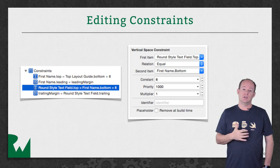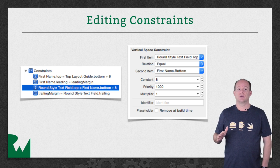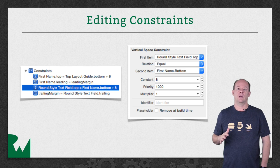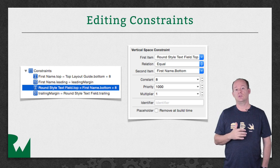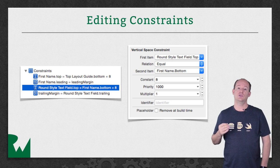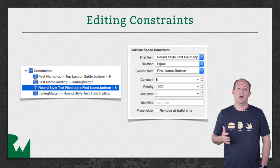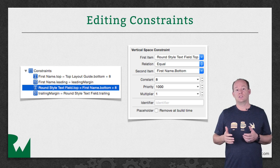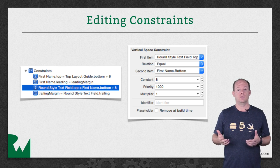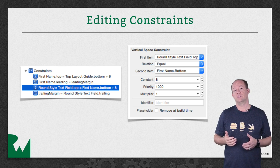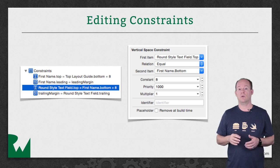Using these fields, you can change all the aspects of a constraint. I'll talk more about some of these, like relation and priority, in a later video tutorial. The important thing here is that it allows you to do some things you can't do another way. Auto Layout will allow you to create constraints between two different attributes of two views, as long as they're in the same direction — vertical or horizontal.